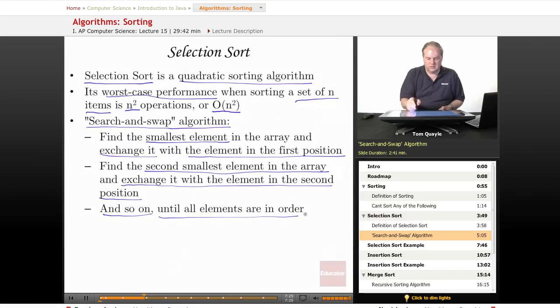And we repeat until all the elements are in order, which means until we've reached the end of the array. Since it takes n comparisons to find the smallest element in an array of n elements, and we then have to move each of those n elements, that's where the n squared performance comes from.